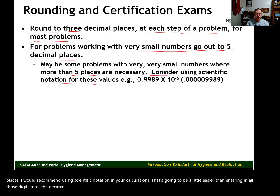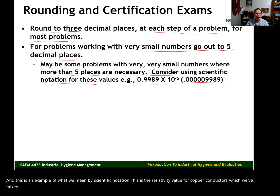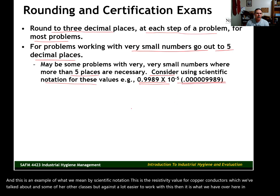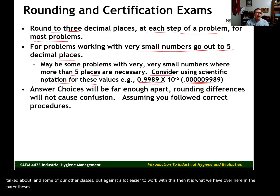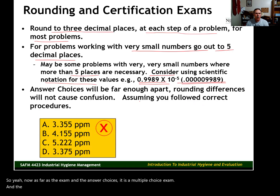If you have to go beyond five decimal places, I would recommend using scientific notation in your calculations. That's going to be easier than entering in all those digits after the decimal. This is an example of what we mean by scientific notation — the resistivity value for copper conductors. It's a lot easier to work with. As for the exam and the answer choices, it is a multiple choice exam and the answer choices are going to be far enough apart that rounding differences should not cause any confusion.